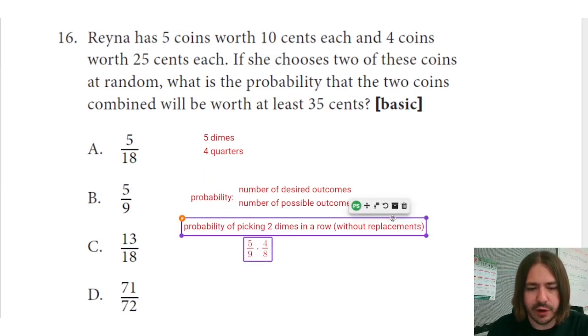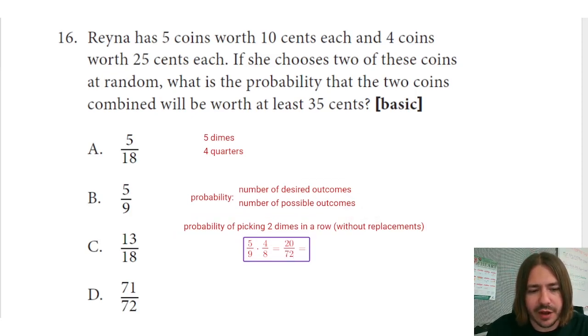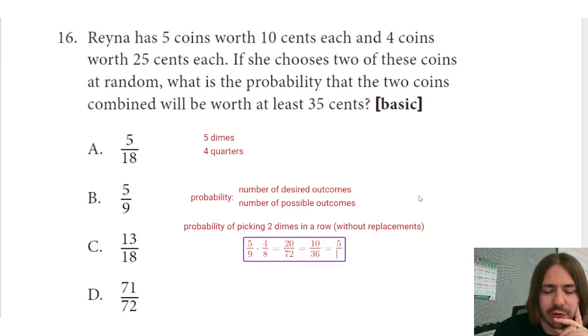So five ninths times four eighths is going to give me, let's see, five times four would be 20, nine times eight would be 72. We can go ahead and put that in, well you know what, let's just go ahead and reduce this. So 20 over 72, what would that reduce to? Let's just do one at a time here. Divide by two, that'd be 10 over 36, and then divide by two again to get five over 18.